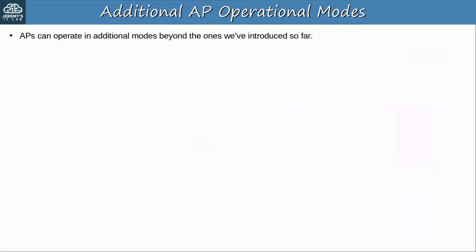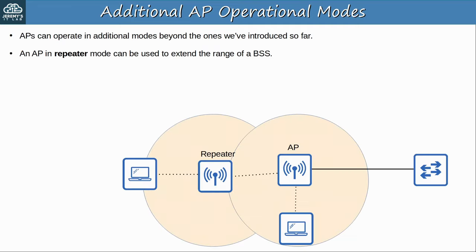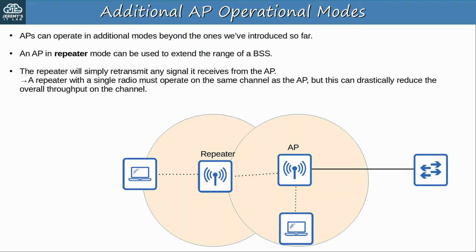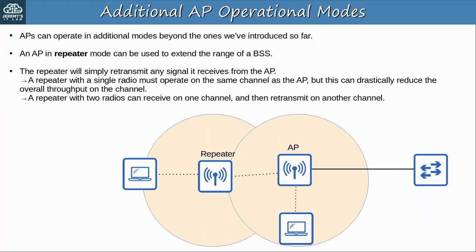An AP in repeater mode can be used to extend the range of a BSS. The repeater will simply retransmit any signal it receives from the AP, extending the range of the AP's BSS. A repeater with a single radio must operate on the same channel as the AP, but this can drastically reduce the overall throughput on the channel, cutting the effective throughput by 50%. A repeater with two radios fixes this weakness because it can receive on one channel and then retransmit on another channel.